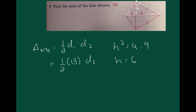So, since the shorter diagonal is bisected, I'll know that the longer diagonal must be 2 times H, or 12. So, my area is going to equal one-half 13 times 12, or 78. Okay, ramblers, thanks for watching.